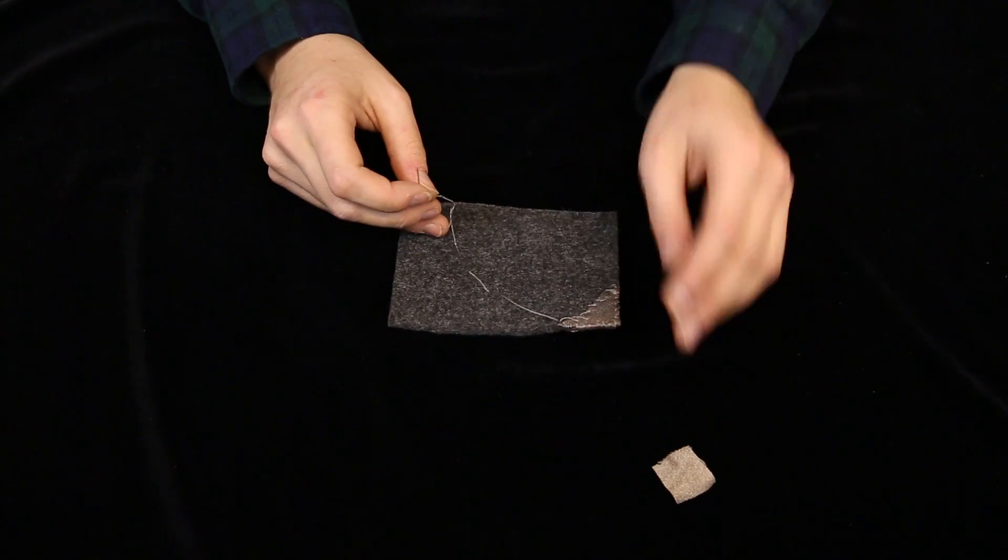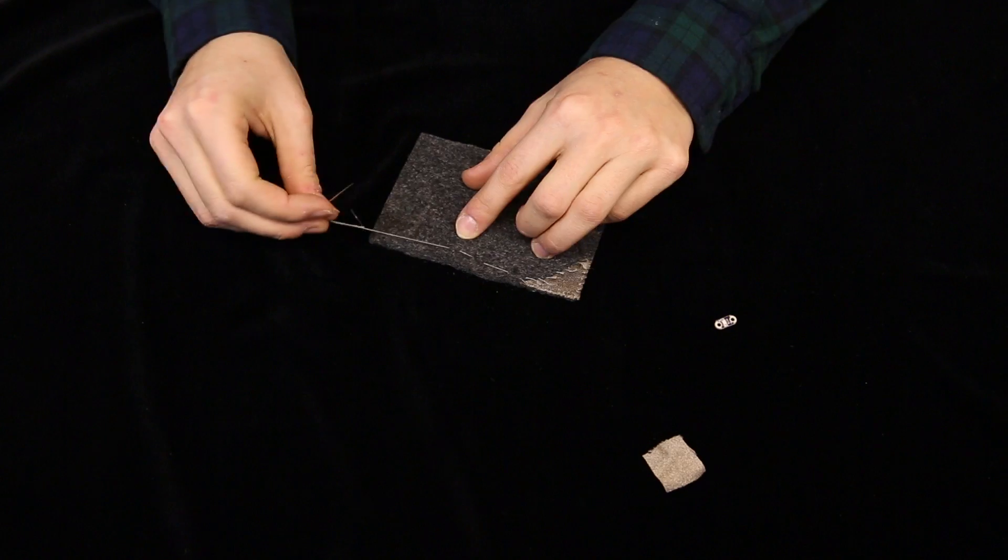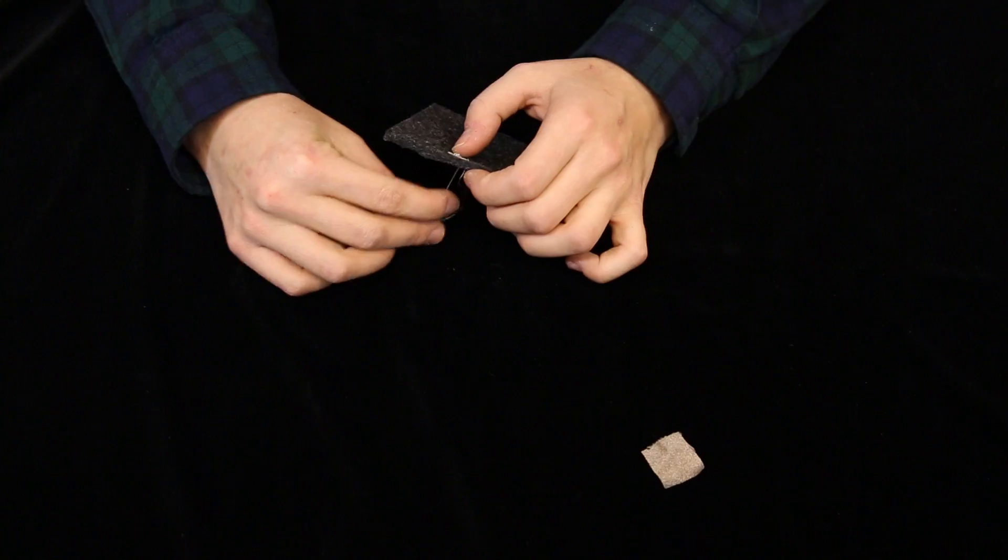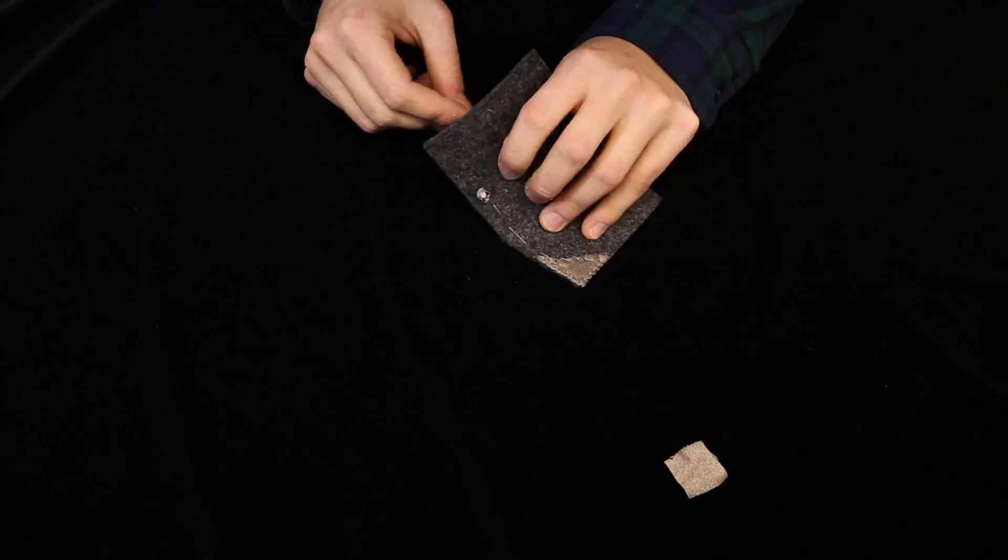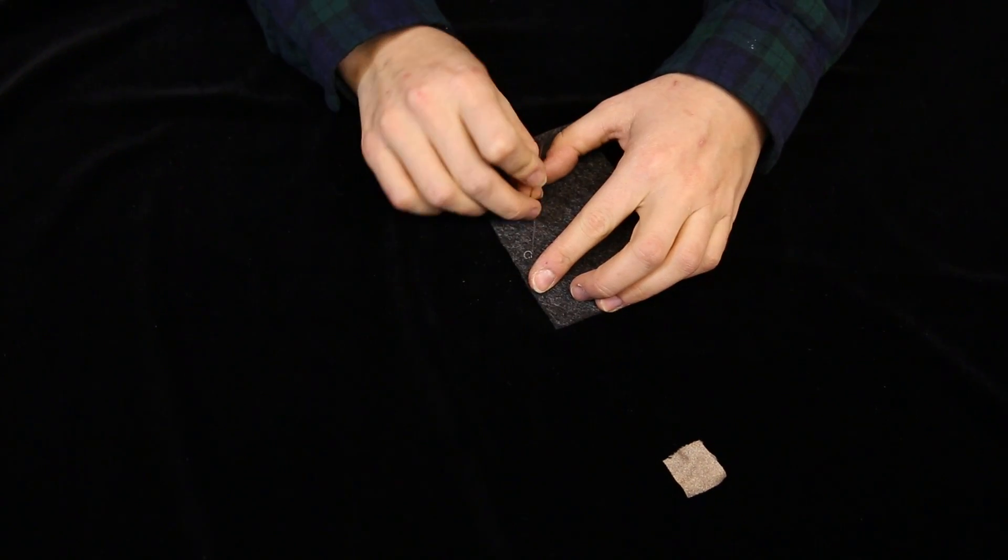Then, with the same piece of thread, stitch down the felt a few inches before connecting it to the LED cathode and tie it off.